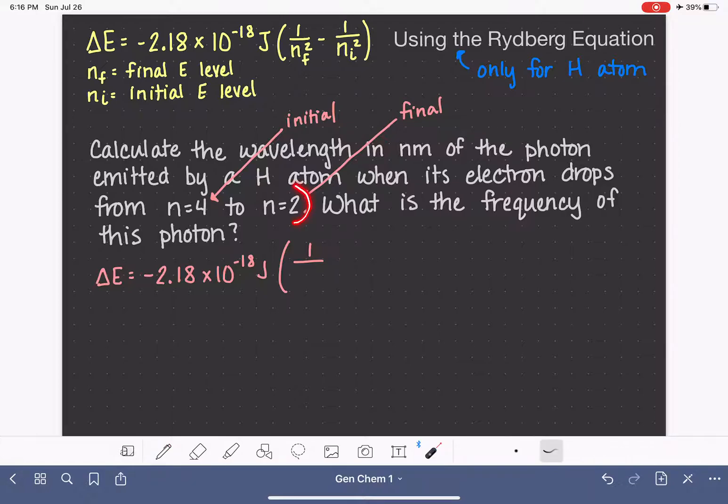And it's going to the N equals 2, so that's our final, because that's its destination. So 1 over the final energy, which is 2, squared, so that's going to be 2 squared, minus 1 over the initial energy level, 4, that'll be 4 squared. And all of this is going to give us the change in energy.